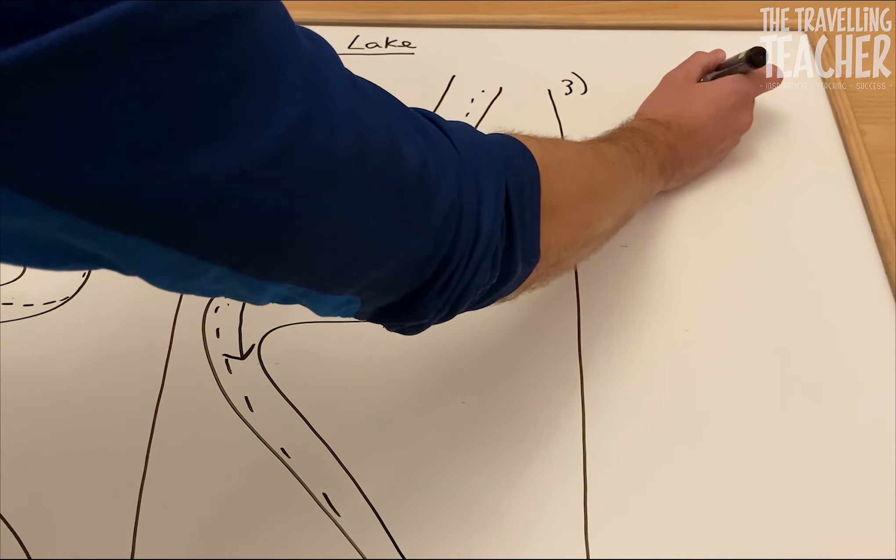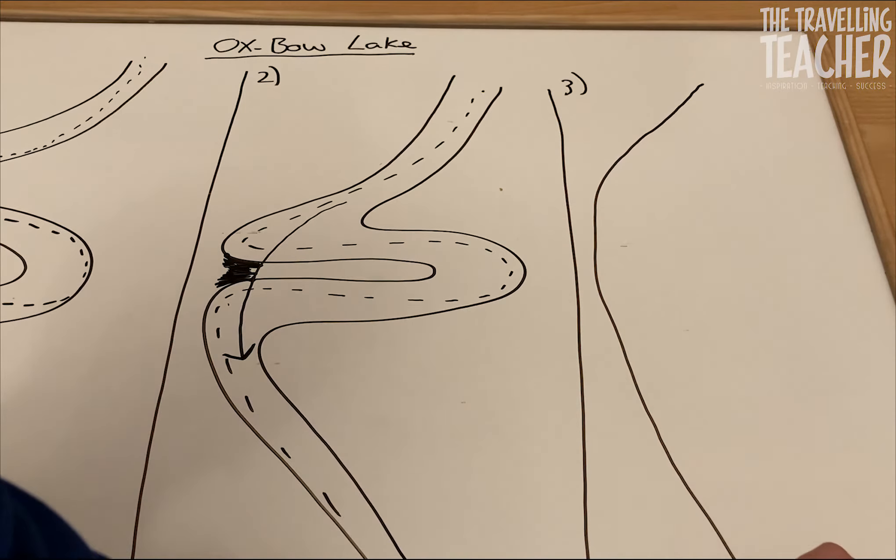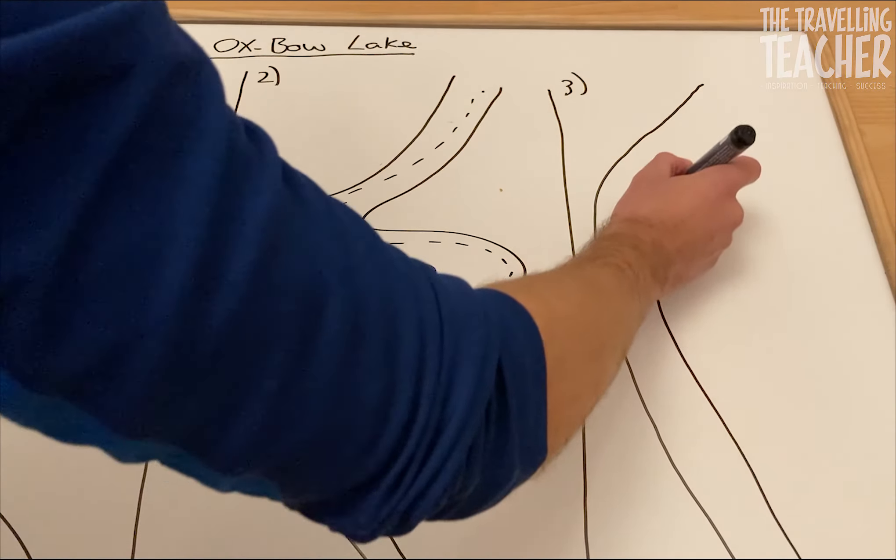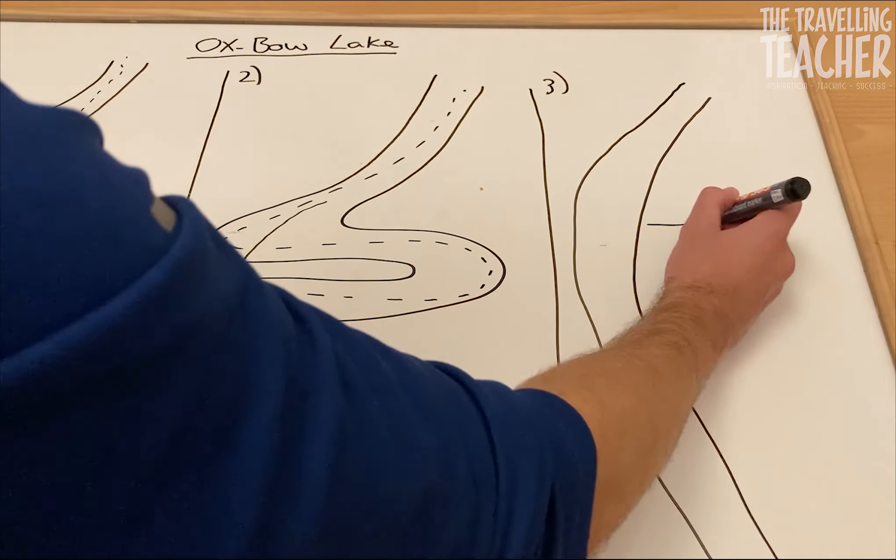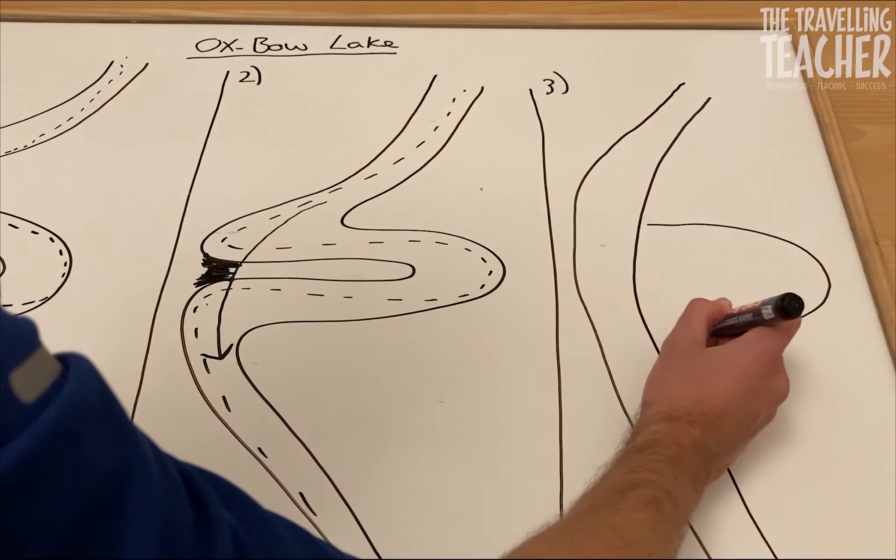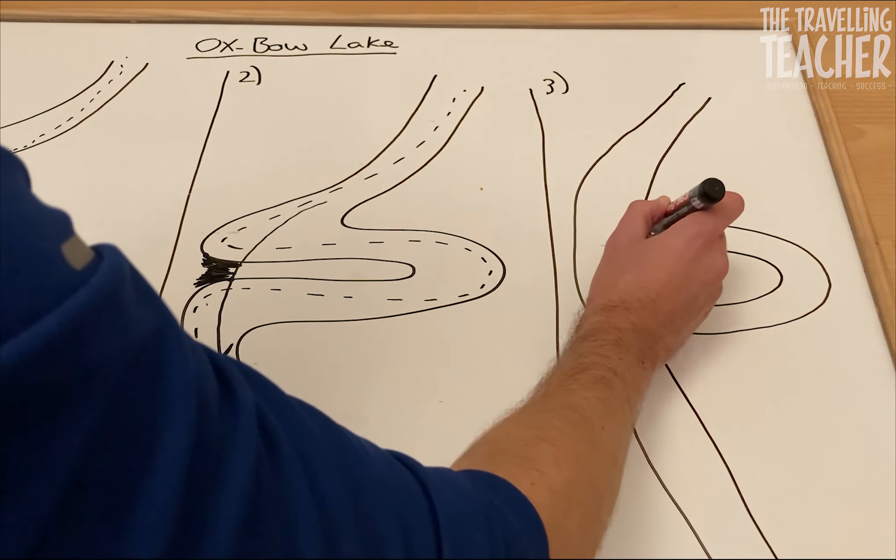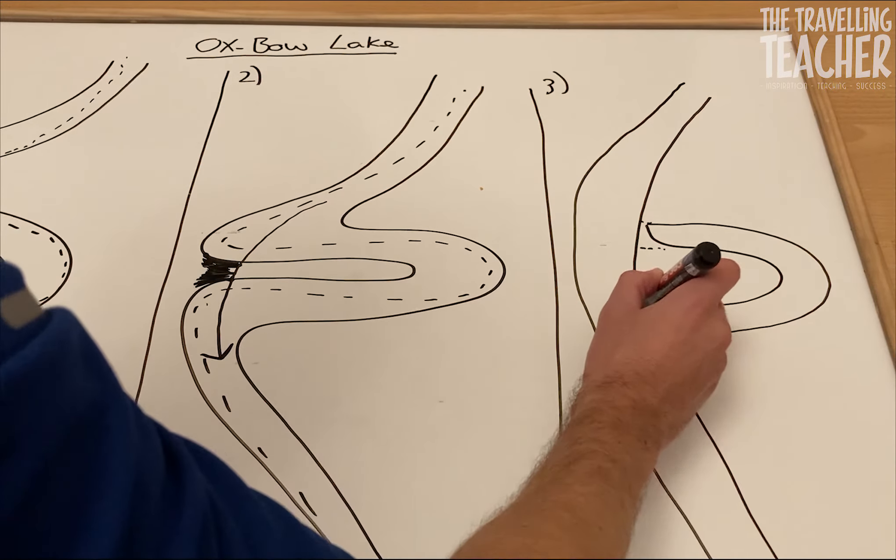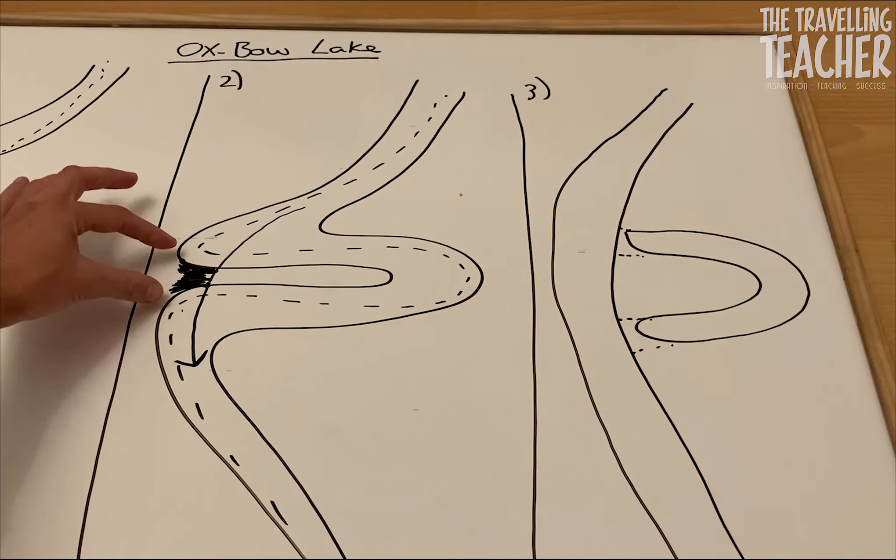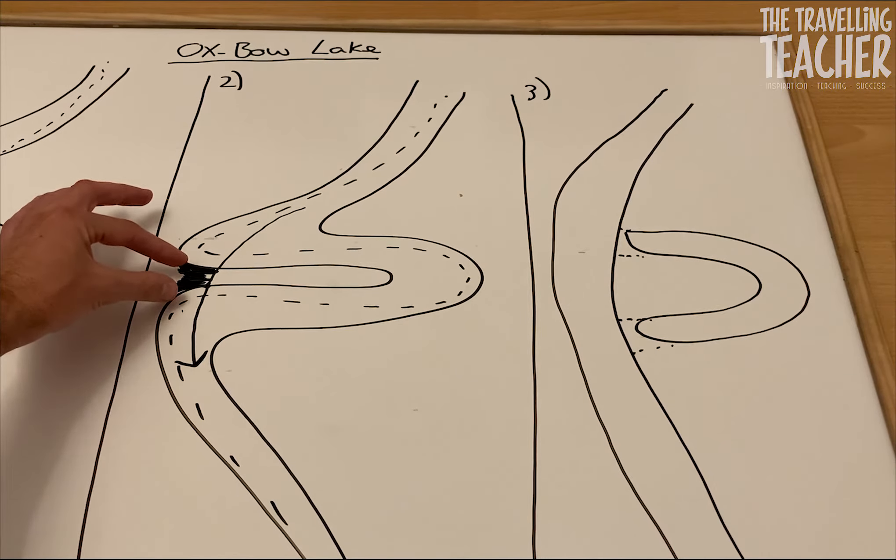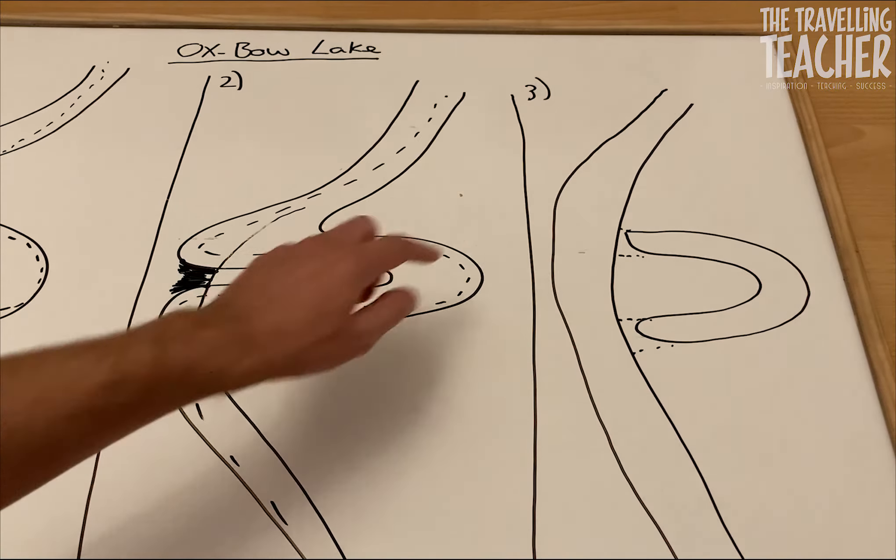So, once that happens, we're now in a situation where the river channel completely changes. There's our detached meander. Our Oxbow Lake. Right, here we go. So, the gap is getting more and more narrow until eventually the water just takes the quickest route and comes through. And here we are.